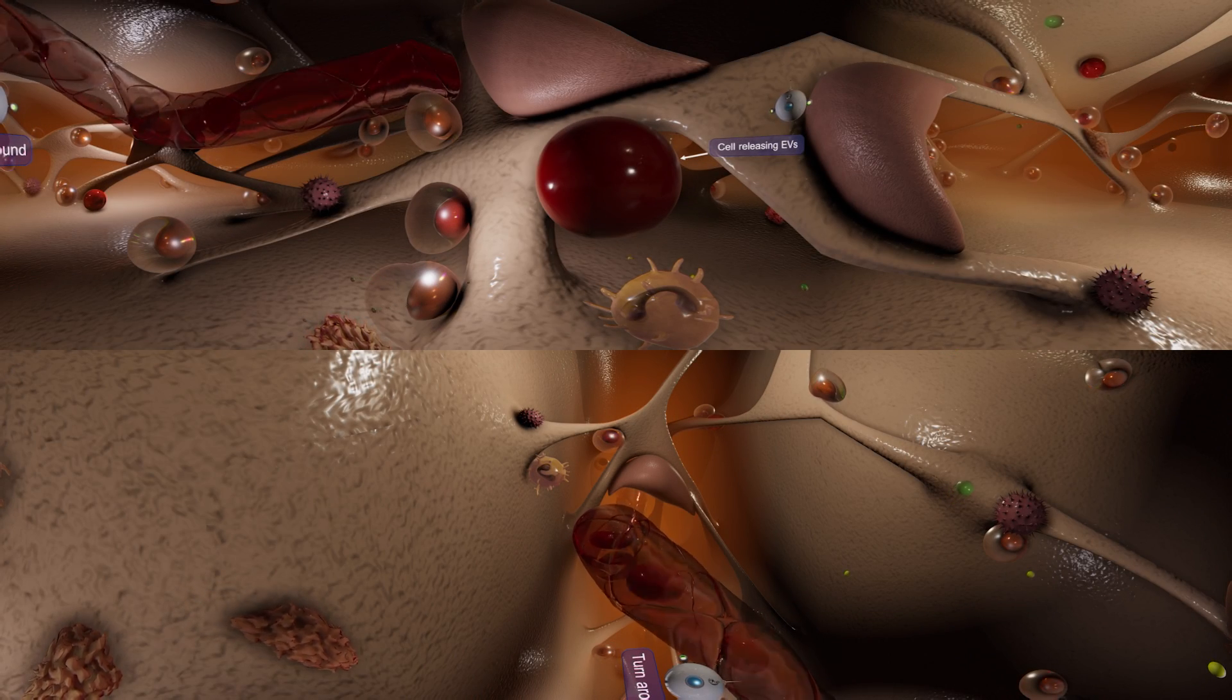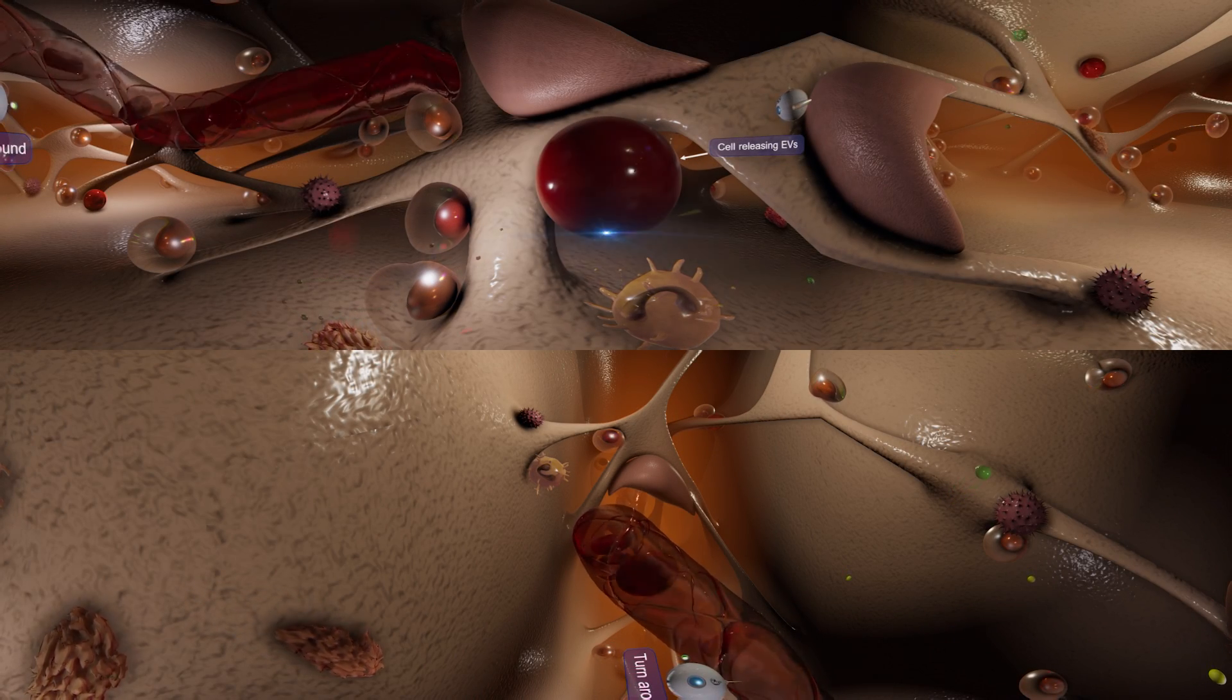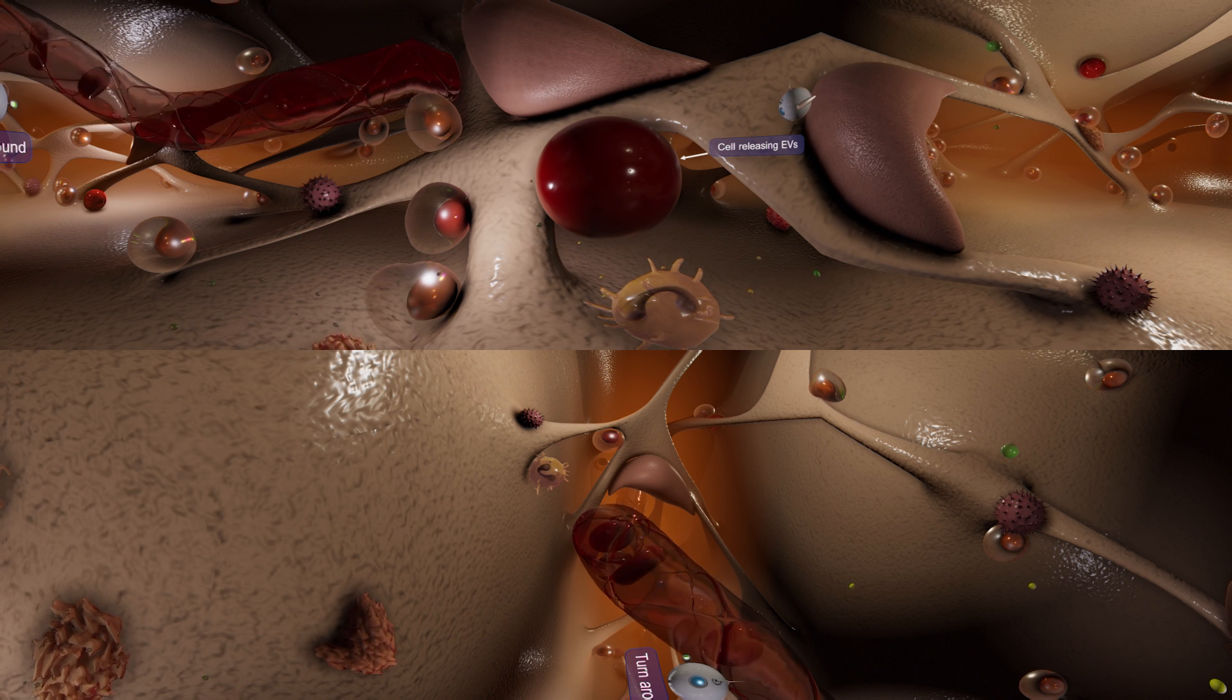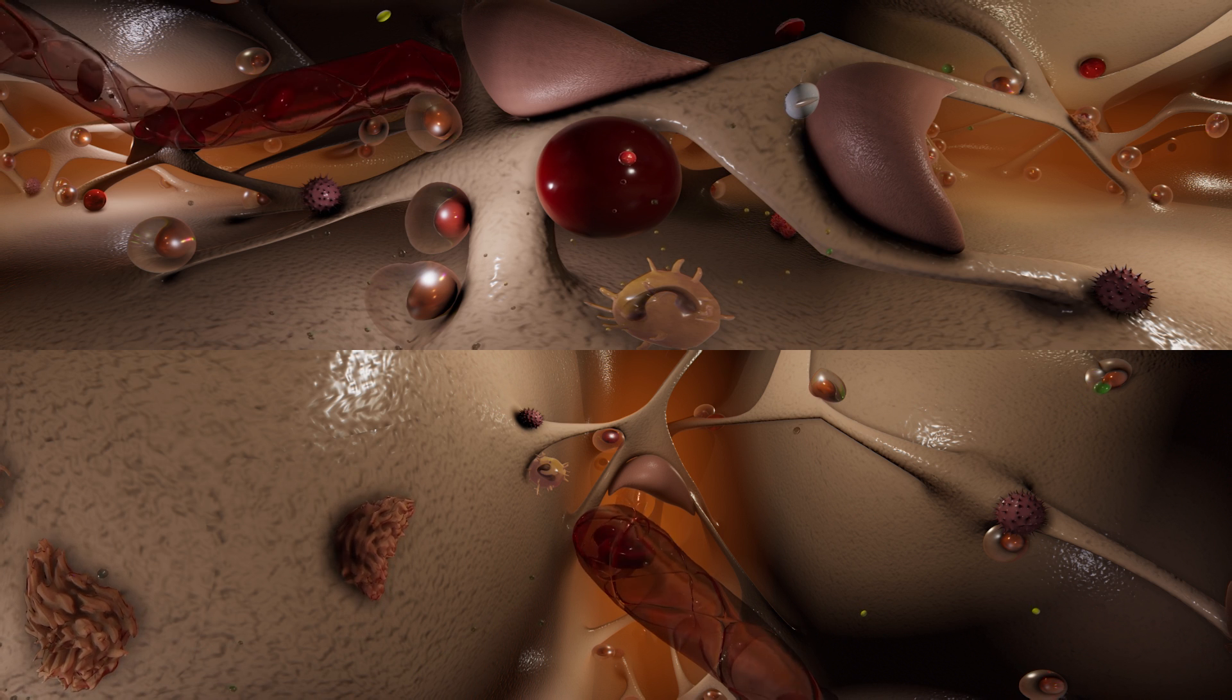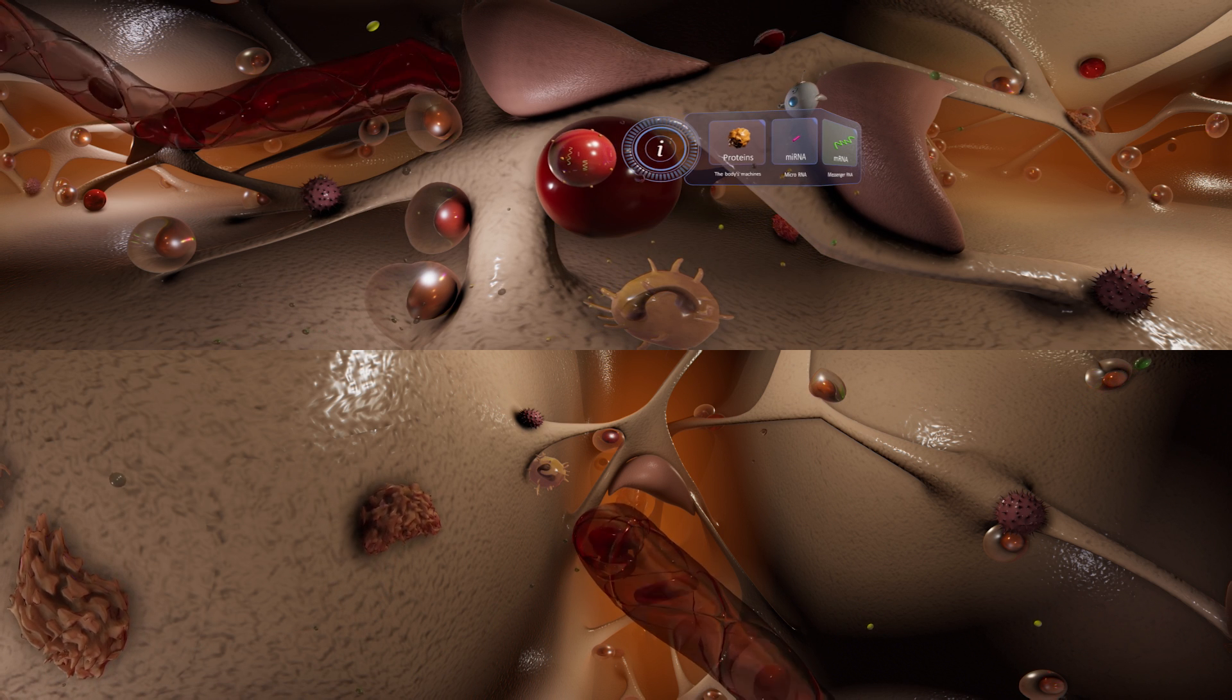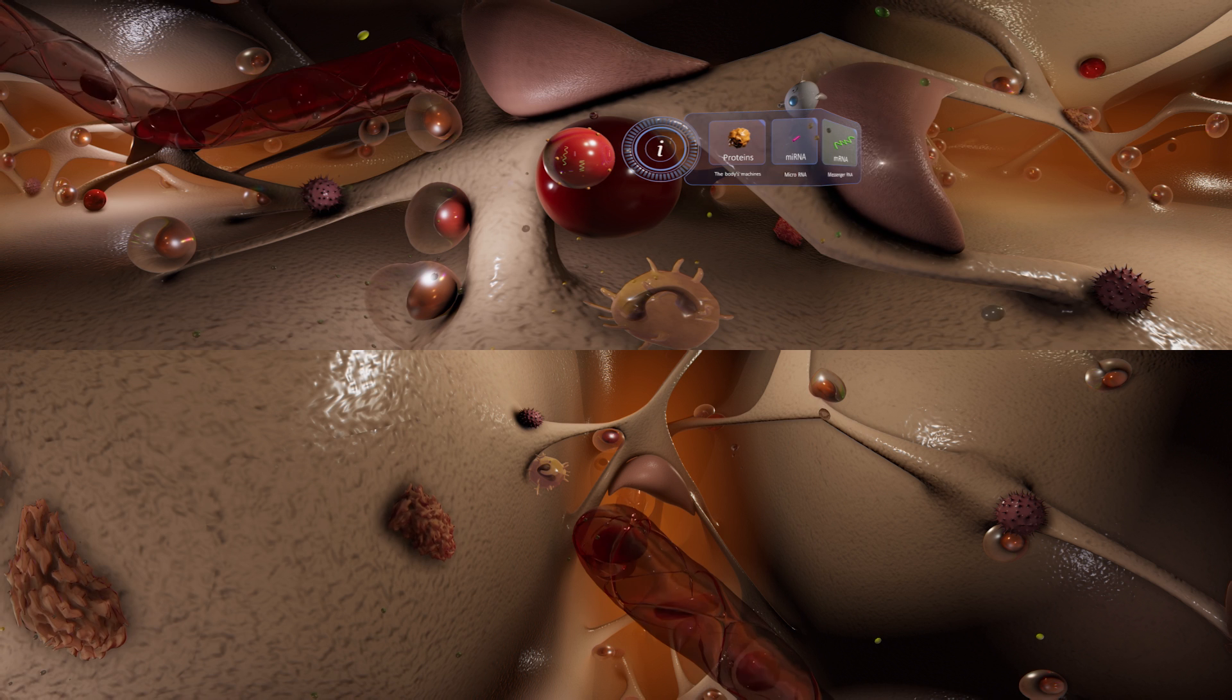It was originally thought that EVs were only used by cells to remove rubbish from the cell, but now it's clear that EVs can play many functional roles. EVs can carry different types of cargo, including proteins and RNA molecules, that can be delivered to recipient cells.